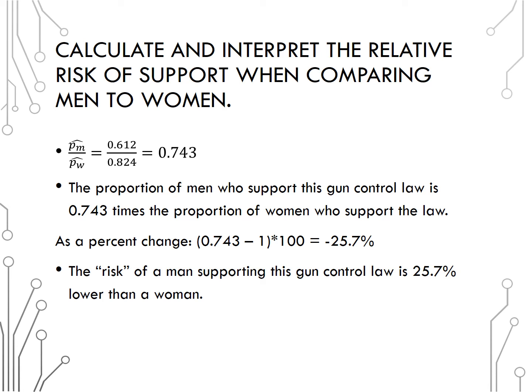Let's interpret that value. The proportion of men who support this gun control law is 0.743 times the proportion of women who support the law. Or as a percent change, we would get negative 25.7%, or the risk of a man supporting this gun control law is 25.7% lower than a woman.